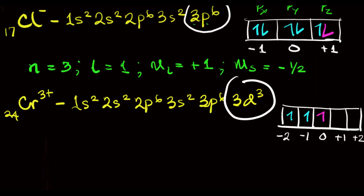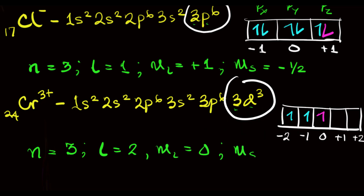So the last electron is in the third 3d orbital. Therefore, the four quantum numbers of the last electron in the chromium(III) ion will be: N equals 3, as this is a member of the first transition series; L equals 2, which is the d subshell; M sub L equals 0; and M sub S equals plus half, which is an upward spin.